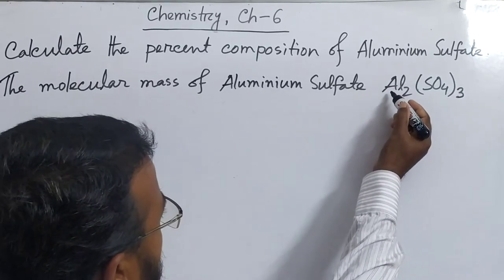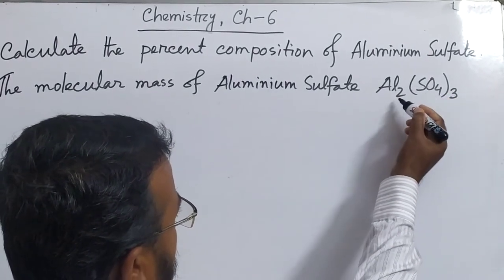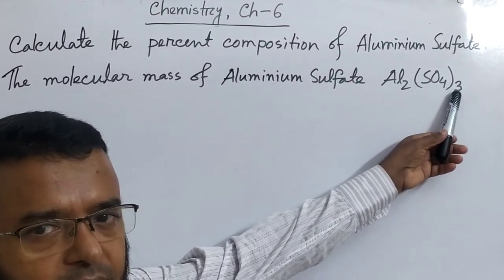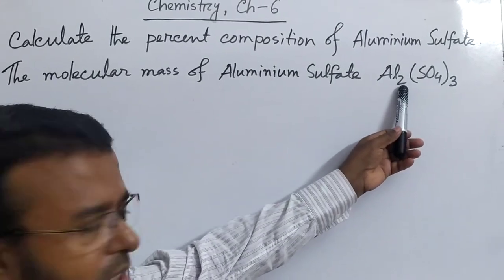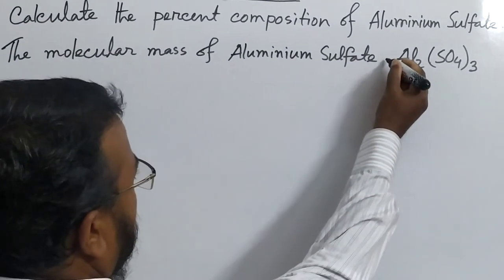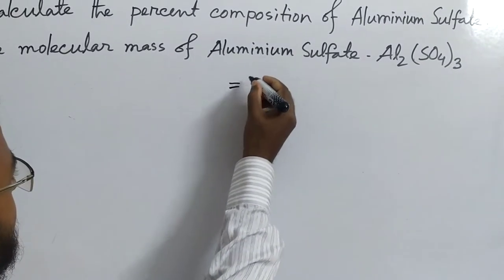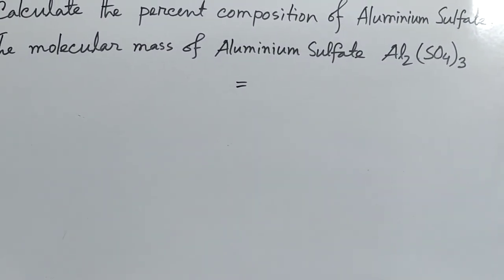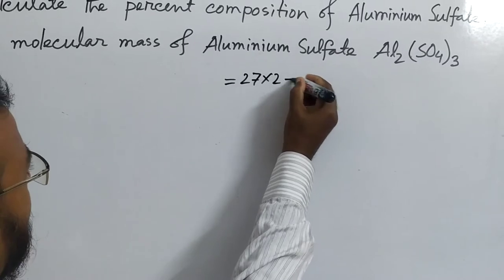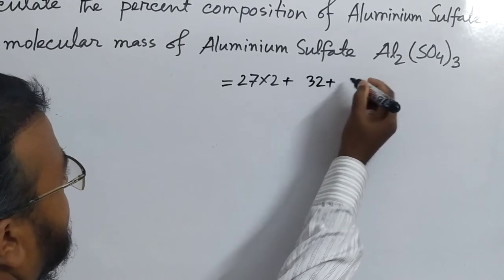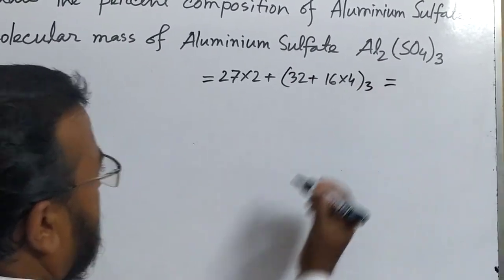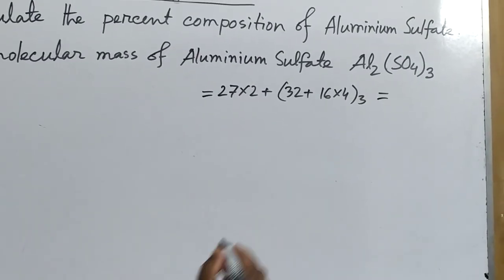The valency of aluminum is 3 and the valency of sulfate is 2. The valency of aluminum is placed with sulfate and the valency of sulfate is placed with aluminum. Aluminum is a metal and sulfate is a radical. The molecular mass is: 27 × 2 + 32 + (16 × 4), all multiplied by 3, giving a total of 342.